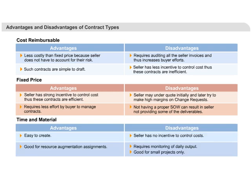In case of a time and material-based contract also, there is no incentive for the seller to control cost. So such contracts are also suitable for small projects only. However, time and material is the most popular contract in resource augmentation kind of projects. Can you think why? Do this as an exercise.